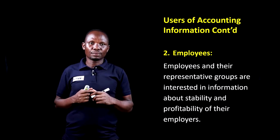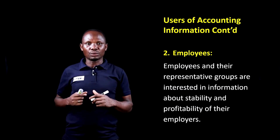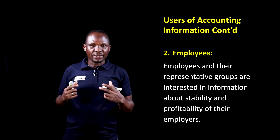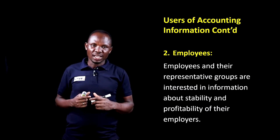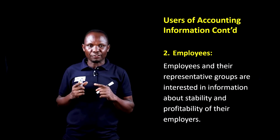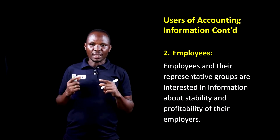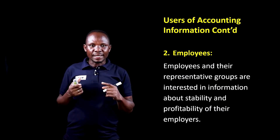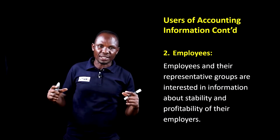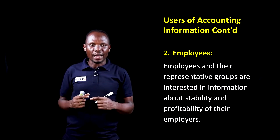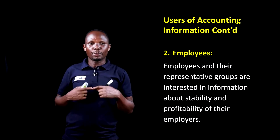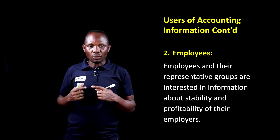The second user of accounting information we will look at is employees. Employees and their representative groups — that is the various labor unions — are also interested in information about the stability and profitability of their employers. Stability is about the entity continuing to exist in the foreseeable future so that employees will have job security. It is only when the employers make profit that they will be able to pay wages and salaries.